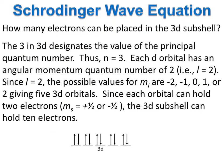How many electrons can be placed in the 3d subshell? The 3 in 3d designates that the principal quantum number is 3, and a d orbital is possible for that quantum number. Each d orbital has an angular momentum quantum number of 2, giving possible values for the magnetic quantum number of minus 2, minus 1, zero, one, or two — for a total of 5 3d orbitals. Since each orbital can hold 2 electrons, the 3d subshell can hold 10 electrons.